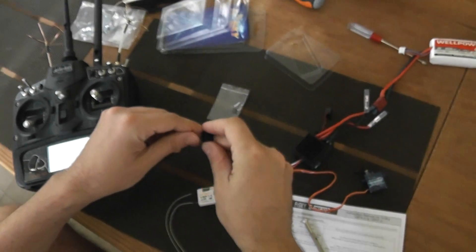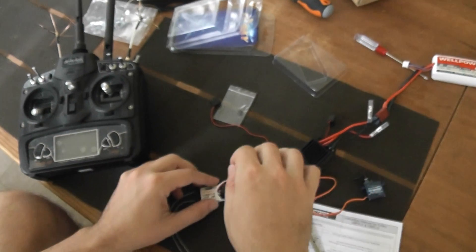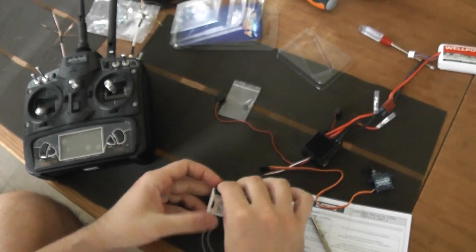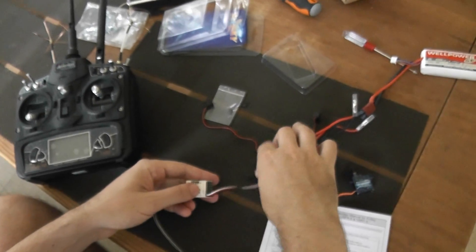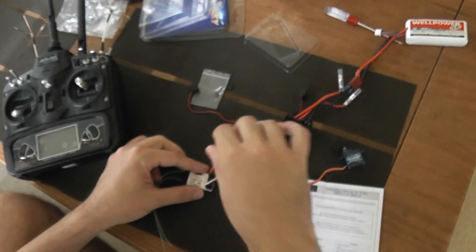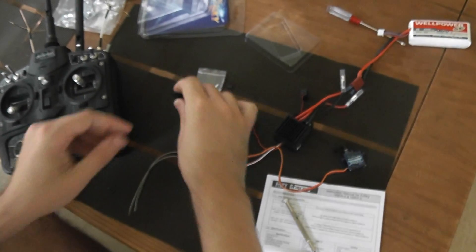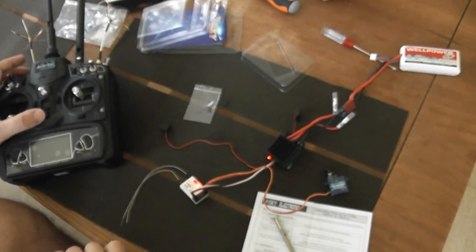So I will turn off the receiver, turn off the Devo, remove the jumper, reinsert the servo in channel 1. Turn on again the receiver, turn on the Devo.